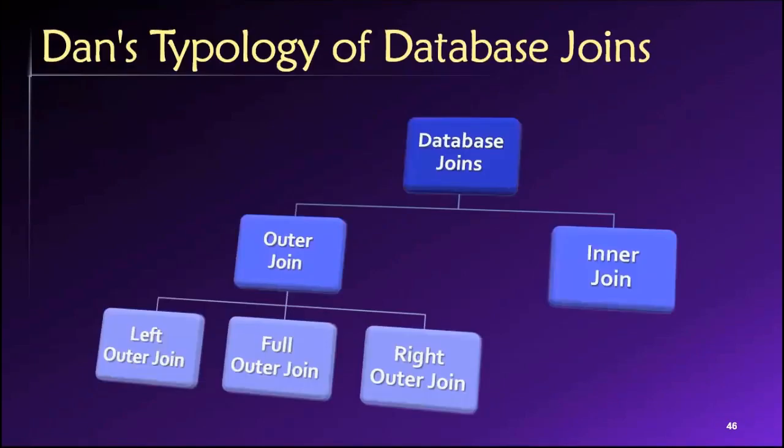Now I'll begin by showing you Dan's topology of joins of database joins. And broadly, as we can see here, all joins can be classified into one of two types. They're either going to be inner joins, which is fine because there's just one type of inner join, right? Or outer joins. So our two major types of joins are inner and outer.